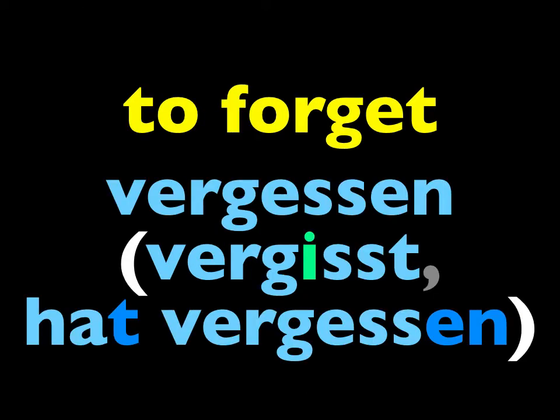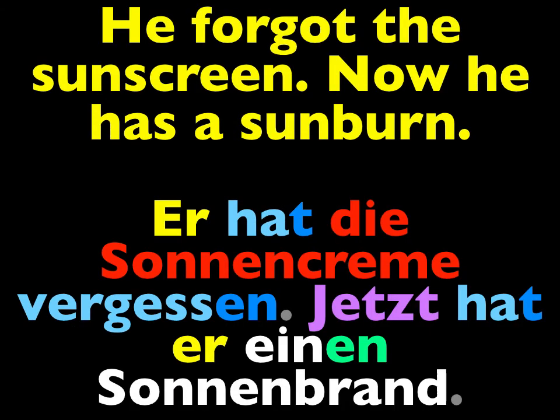Repeat the word to forget. The verb is vergessen. Notice the irregularity in the er/es form, which also occurs in the du form. Er vergisst would be he forgets. And the past tense — er hat vergessen. It's a strong verb. Say: he forgot the sunscreen, now he has a sunburn. Er hat die Sonnencreme vergessen. Jetzt hat er einen Sonnenbrand.